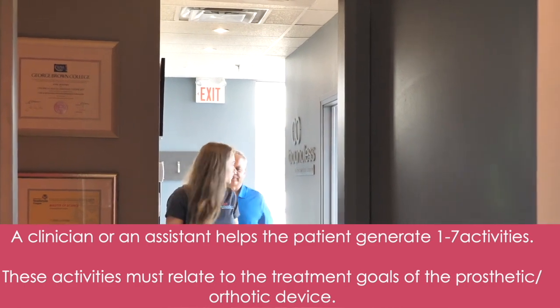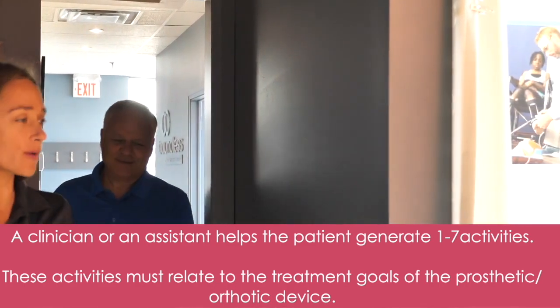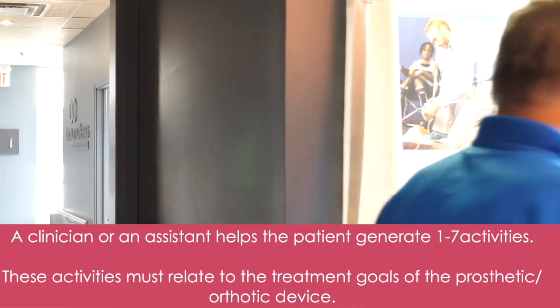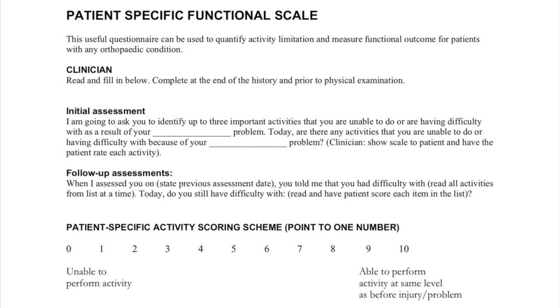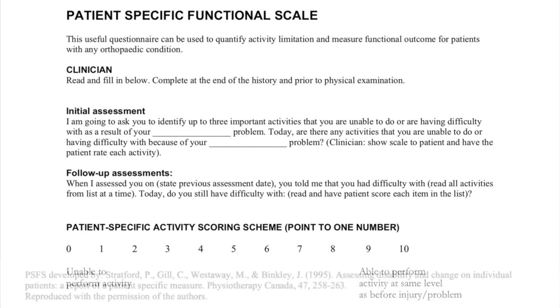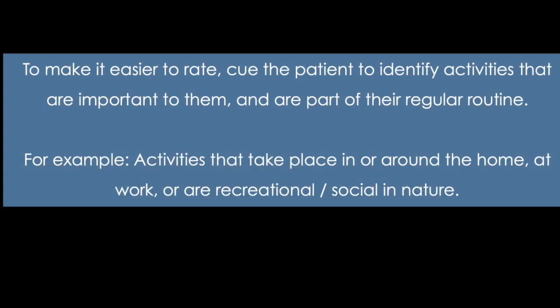The clinician or an assistant helps the patient generate one to seven activities. These activities must relate to the treatment goals of the device. To make it easier to rate, cue the patient to identify activities that are important to them and are part of their regular routine — for example, activities that take place in or around the home, at work, or are recreational.